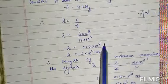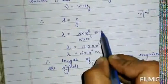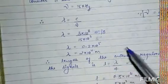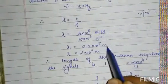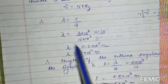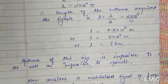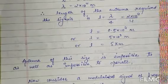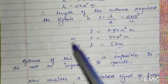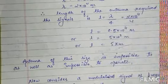Solving the formula, lambda = 3×10⁸ divided by 15×10³, which gives us lambda = 2×10⁴ meters. The unit works out as meters per second divided by per second, leaving us with meters. Therefore, the length of antenna required to send this signal is given by the Marconi antenna rule: L = lambda by 4.